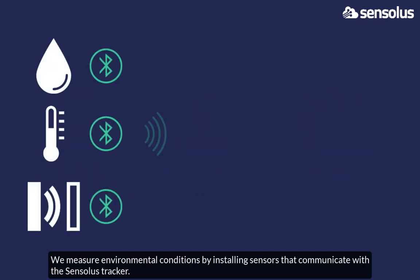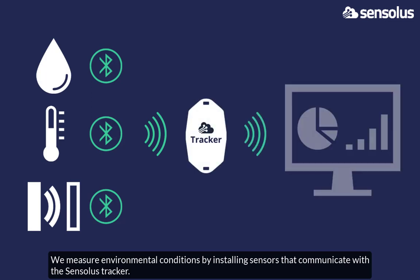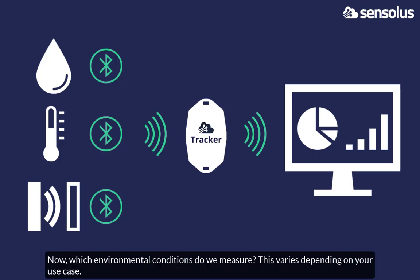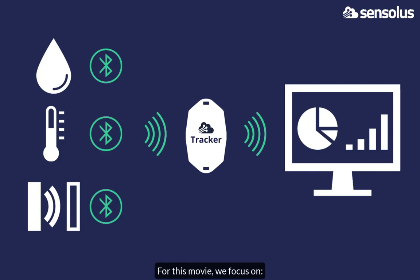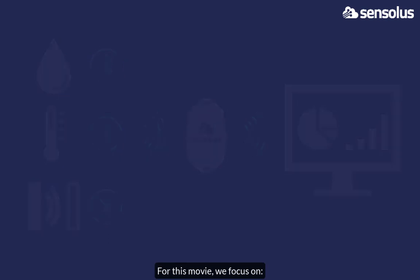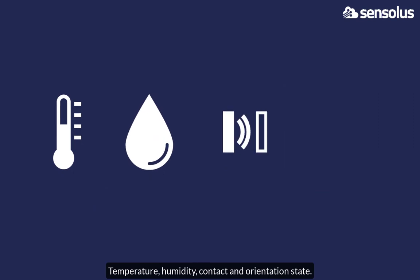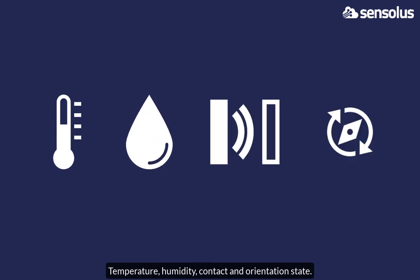We measure environmental conditions by installing sensors that communicate with the Sensilis tracker. The latter sends the data altogether to the Sensilis platform. Which environmental conditions do we measure? This varies depending on your use case. For this movie, we focus on temperature, humidity, contact, and orientation state.